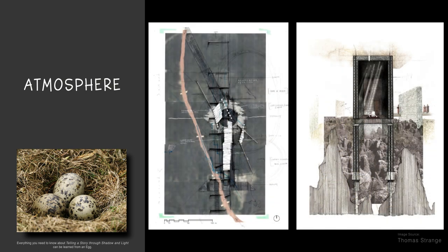In these drawings by student Thomas Strange, atmosphere is created in the plan drawing by using a combination of texture and contrast, as well as by integrating hard line drawing with soft, fluid sketching. In the section drawing of the same project, he creates atmosphere by incorporating high contrast textures and soft contrast textures.